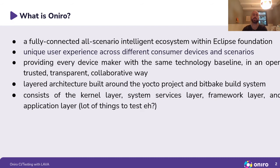So what is Oniro? It's a fully connected all-scenario intelligence ecosystem within the Eclipse Foundation. It provides a unique user experience across different consumer devices and scenarios, providing every device maker with the same technology baseline in an open, trusted, transparent way. The layered architecture is built around the Yocto project and the big build system.